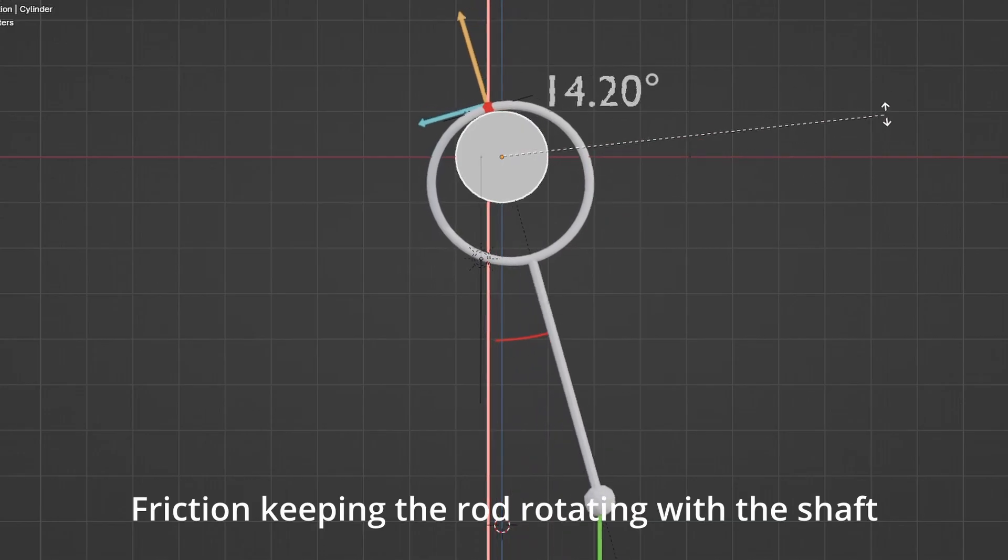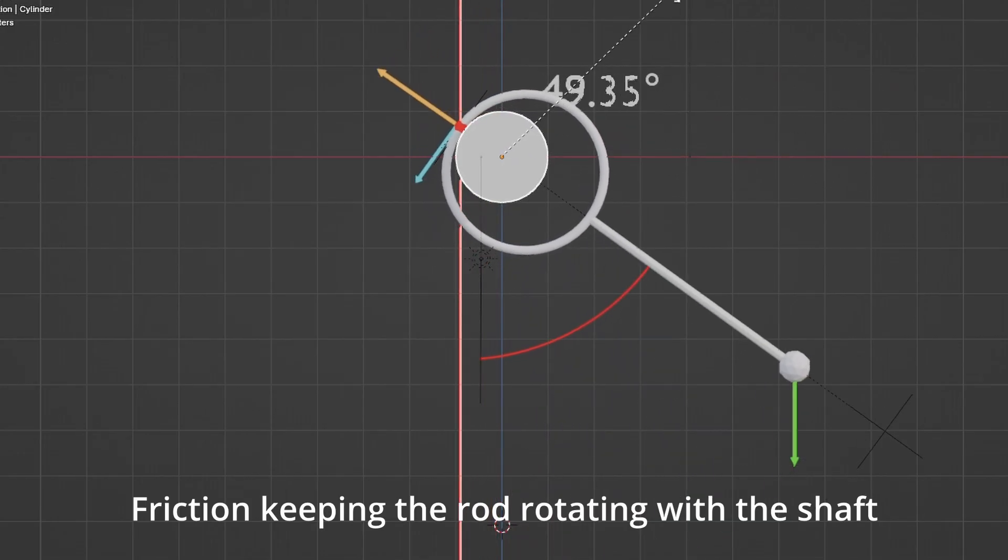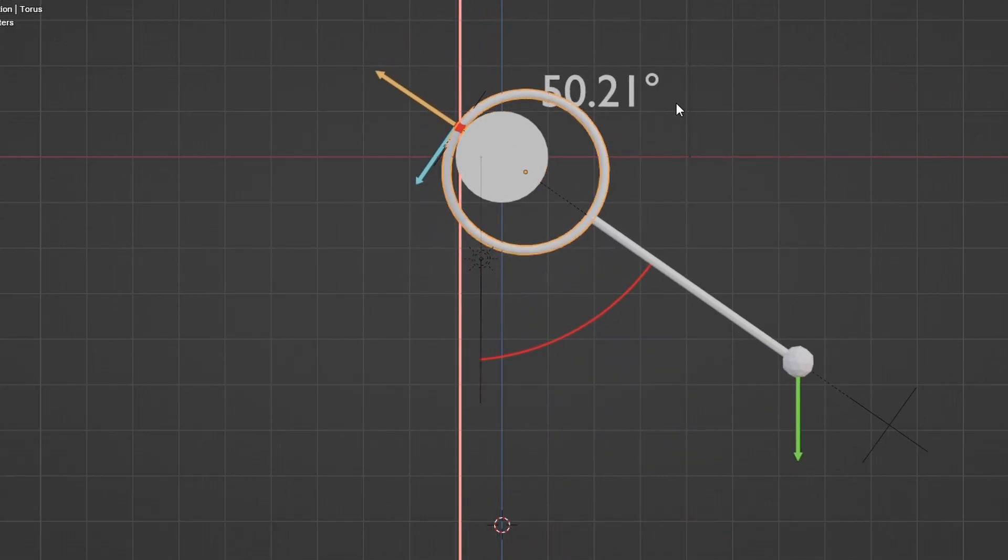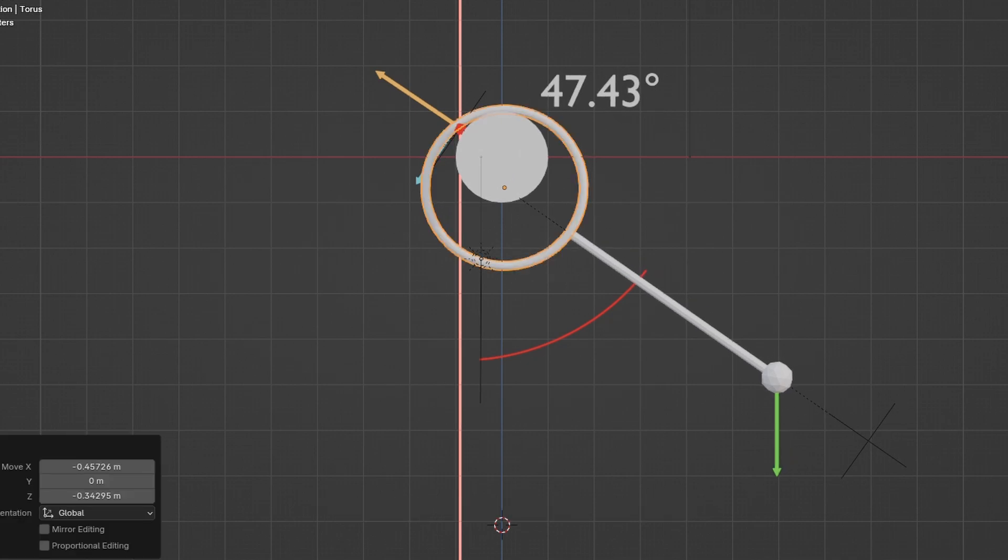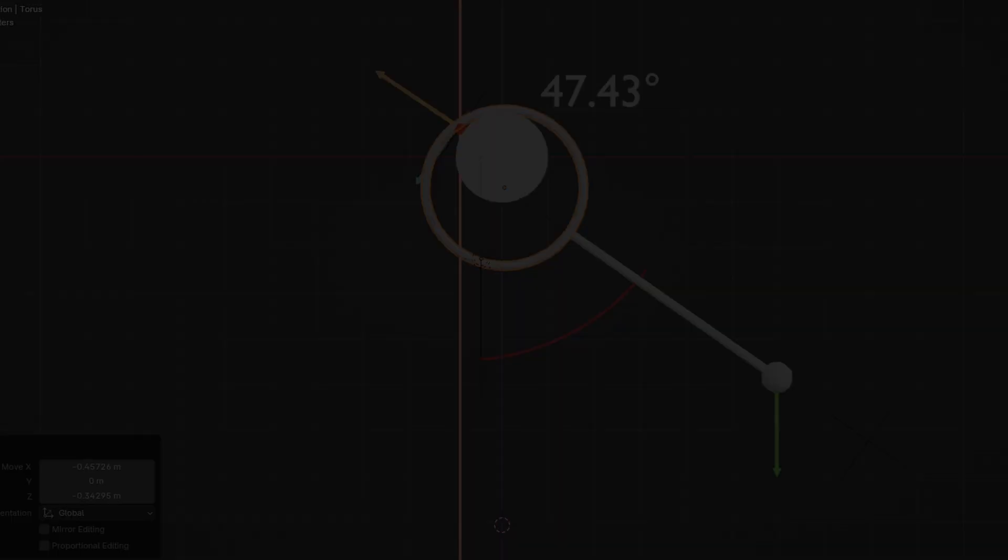How long will the friction keep the rod rotating with the shaft before the weight causes it to slip? And how many times does this process have to occur in order for it to reach a position where the forces and the moments are balanced?